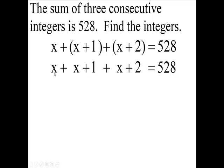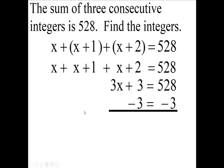You still have 528. Now, how many x's do I have? Count them. One, two, three of them. And one plus two is? Bring down the 528. Now, we'll subtract three from both sides. We'll have 3x, then, is 525.